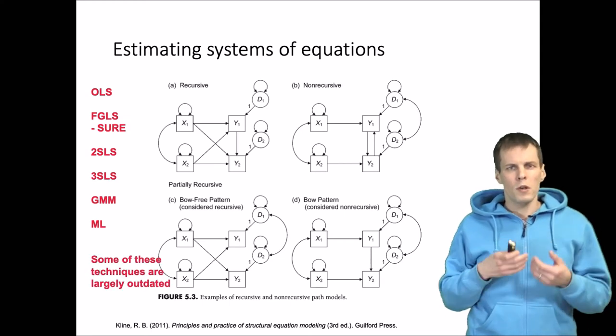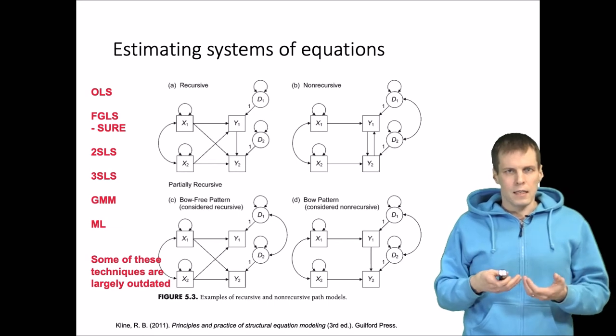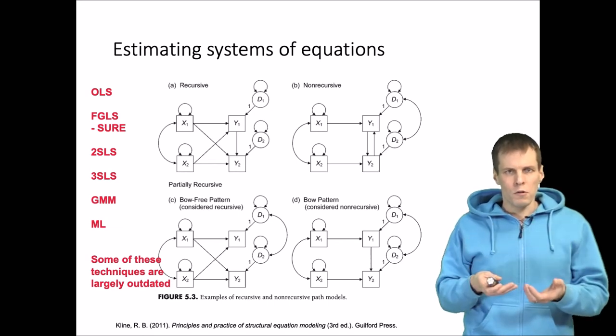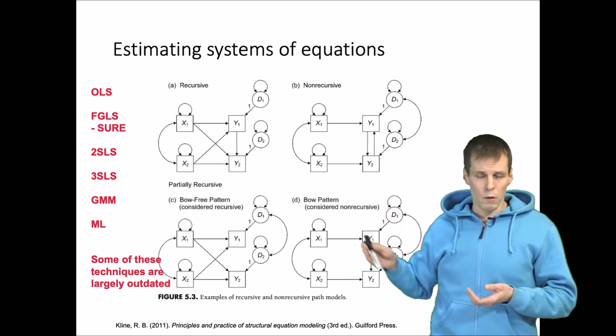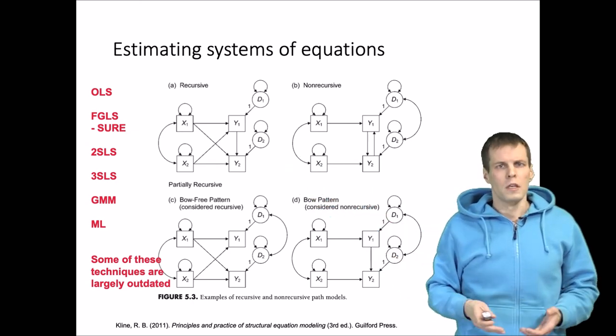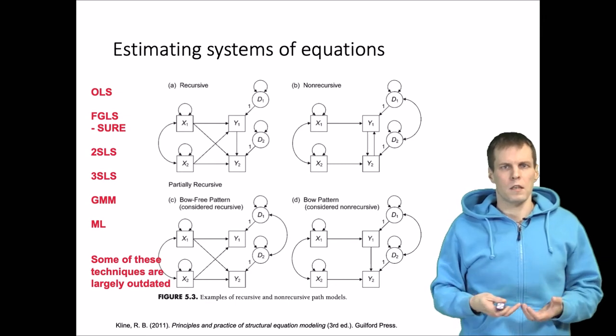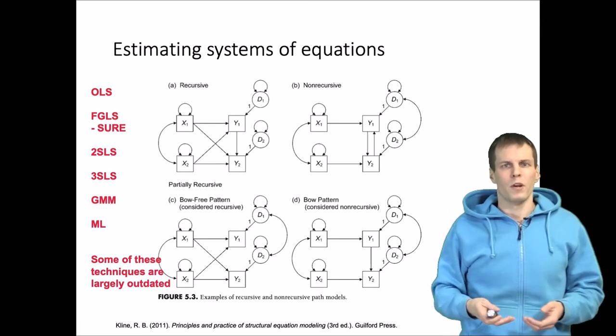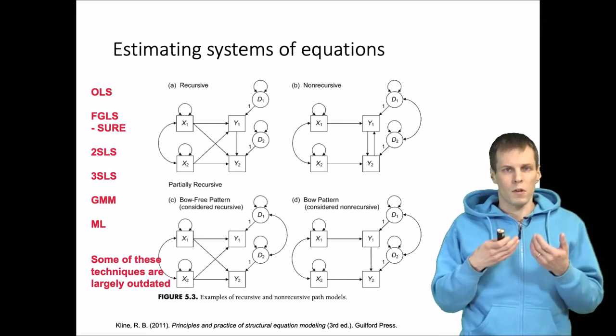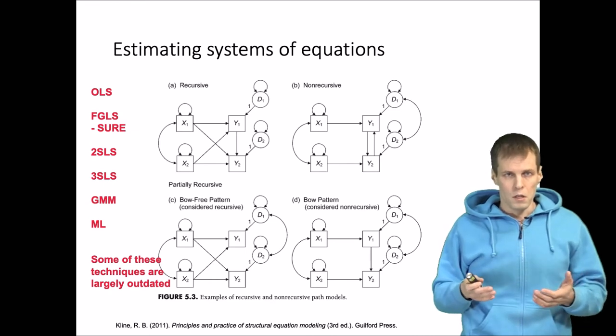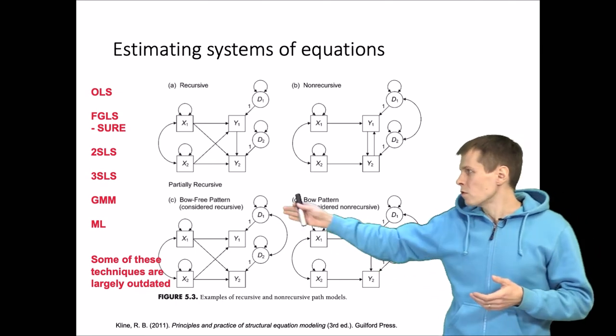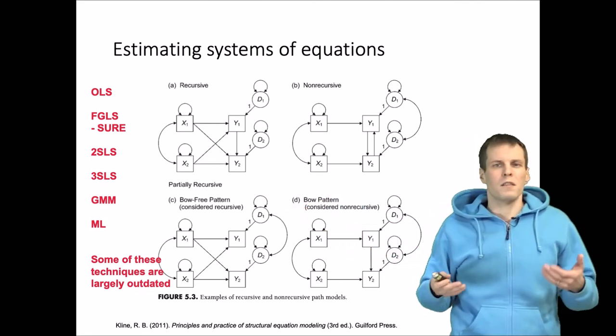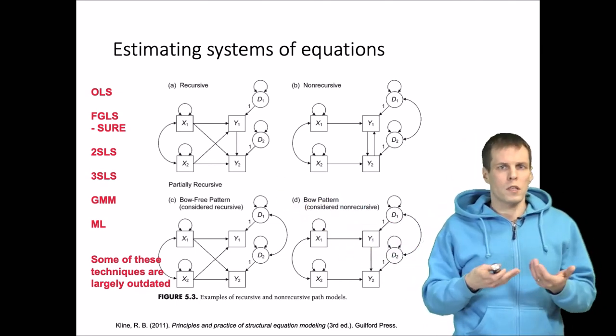They are obsolete in the sense that when they were introduced, for example, GMM was not available when three stage least squares was introduced. Now three stage least squares is covered by econometrics books because it is still being used and it's also covered for historical reasons. Whether you want to use that or not—I probably wouldn't, I would go for GMM—but it's useful to know how these are related.